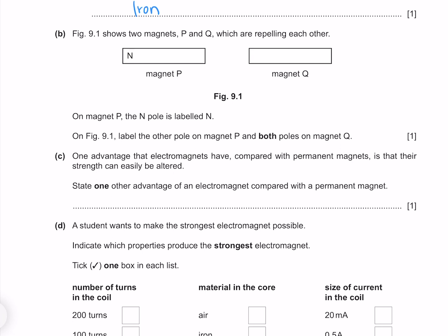Figure 9.1 shows two magnets P and Q which are repelling each other. On magnet P the north pole is labelled N. On figure 9.1 label the other pole on magnet P and both poles on magnet Q. If our north pole is here then we must have a south pole here. For repulsion to be occurring we must have a south pole here, because likes repel. If we have a south pole here then we must have a north pole here.